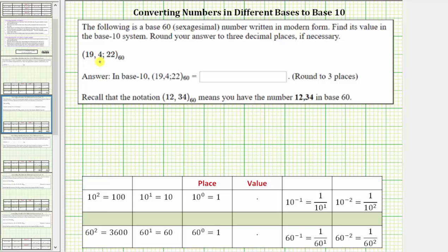We are given 19 comma 4 semicolon 22 base 60. This semicolon is important. This represents where the decimal point would be in the number.